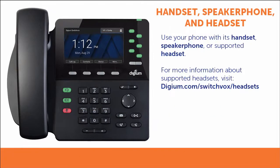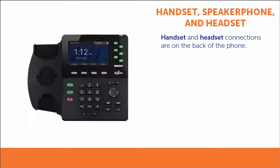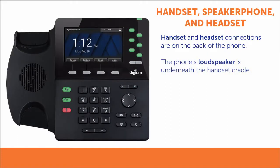Your phone can be used with its handset, the speakerphone, or with a separate headset. For more information on supported headsets, please visit the Digium website. The handset and headset connections are located on the back of the phone. The phone's loudspeaker for hands-free and speakerphone operation is found underneath the handset cradle.